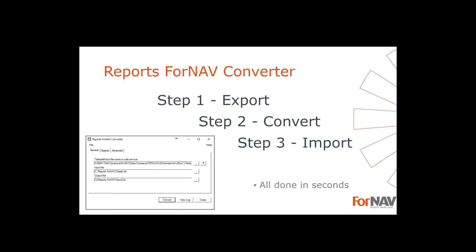For those who don't know the converter, it's a very easy and simple tool. Basically what you do is: Step 1, export one or multiple reports from your C/SIDE database. Step 2, run them through our converter. Step 3, import the converted reports into your NAV 2013, 2015, or 2016, compile it, and run your reports. That's basically what it takes to convert reports from 2009 or C/SIDE, and this whole operation is done in seconds.